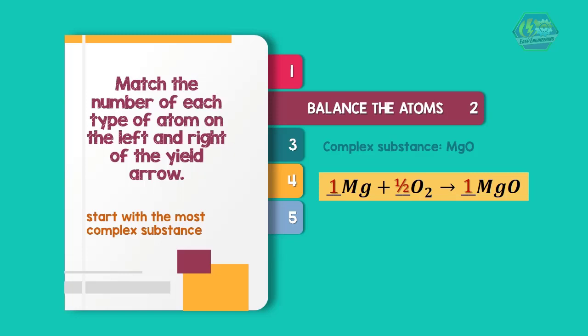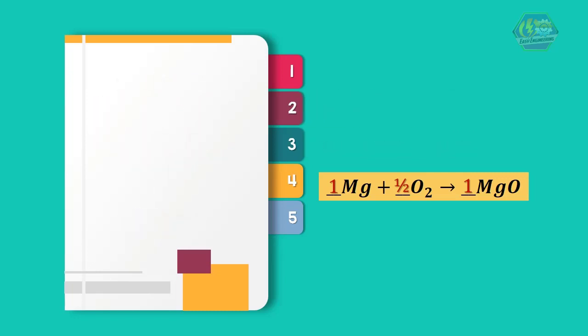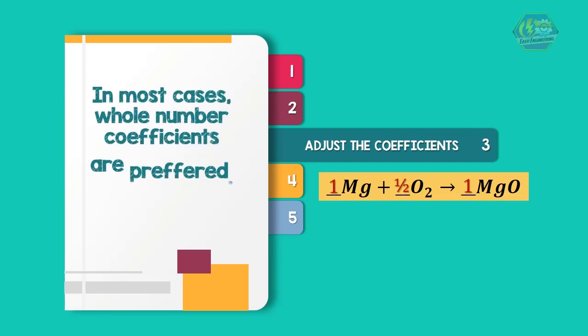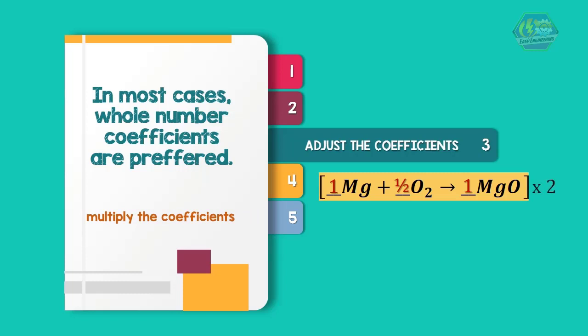Now step 3: Adjusting the coefficients. In most cases, whole number coefficients are preferred. One-half of an O2 molecule cannot exist, so here we need to multiply the coefficients to have all coefficients as whole numbers. A coefficient of 1 is implied by the presence of the formula, so we don't have to write it.